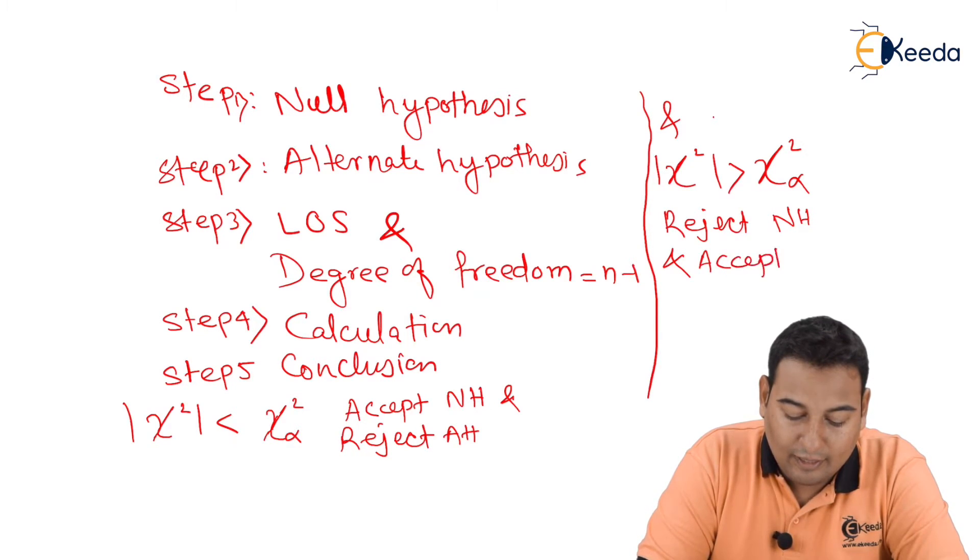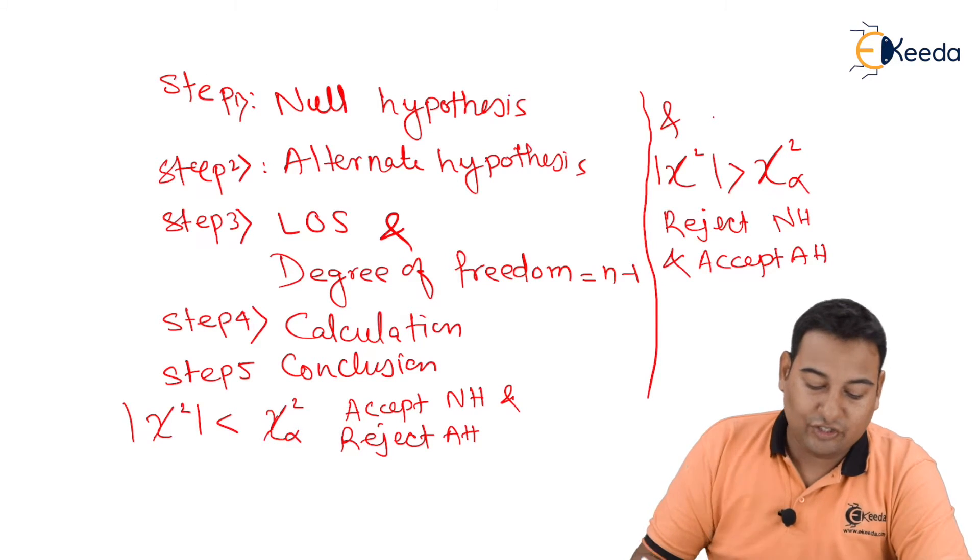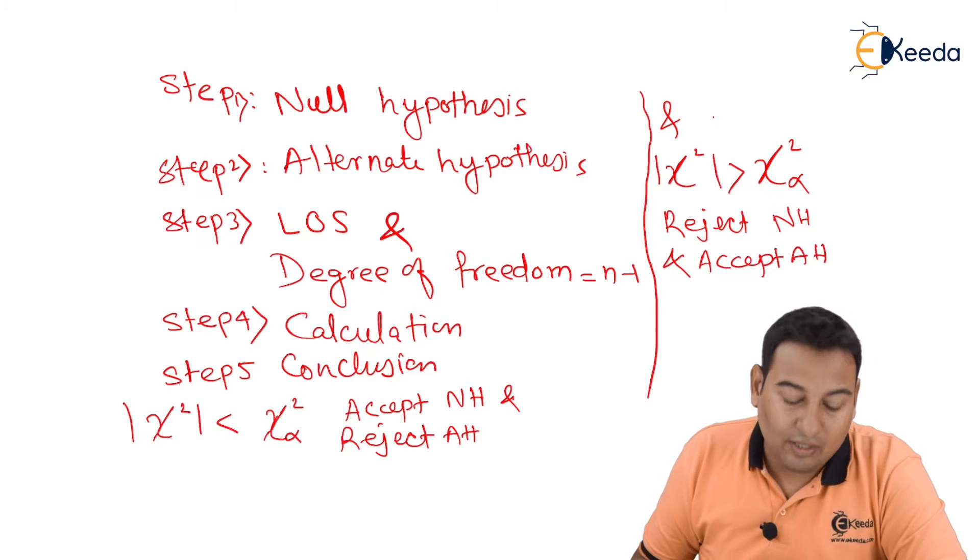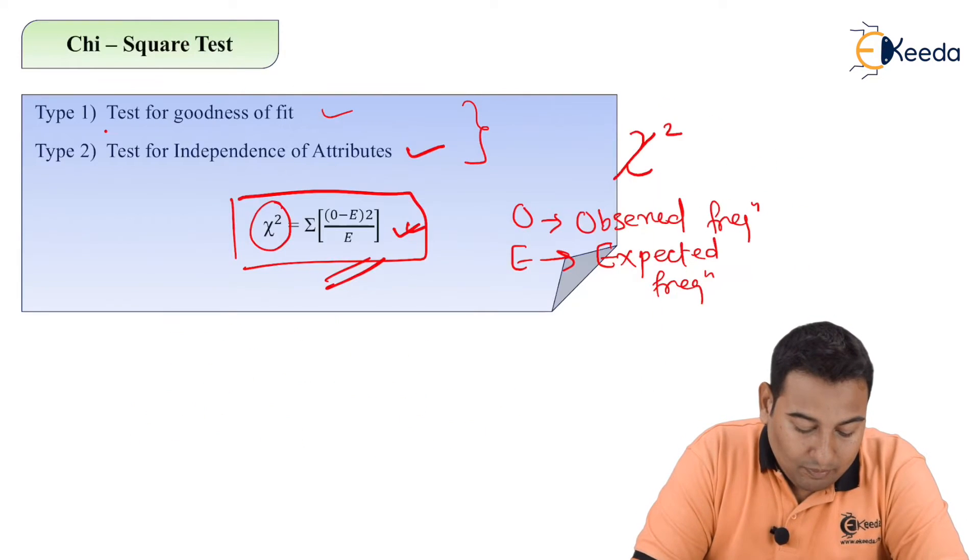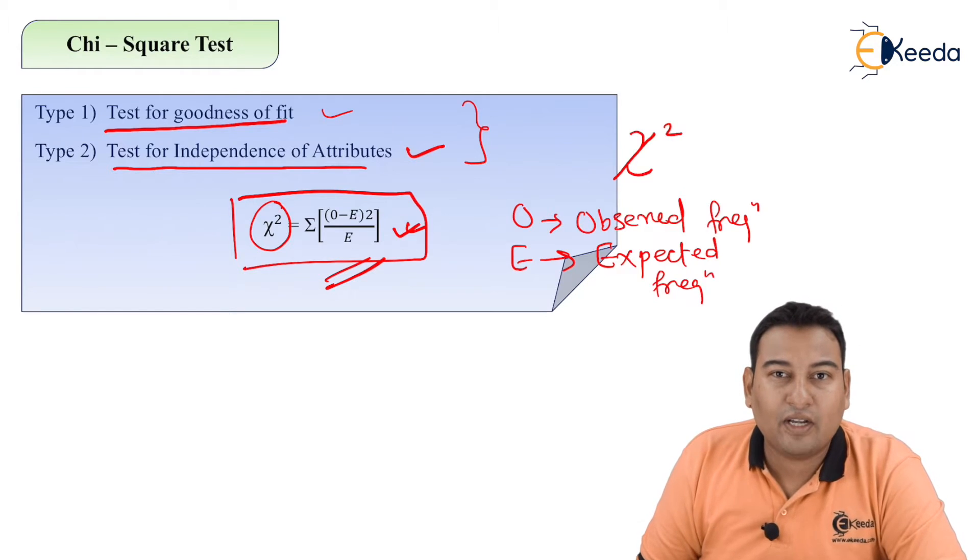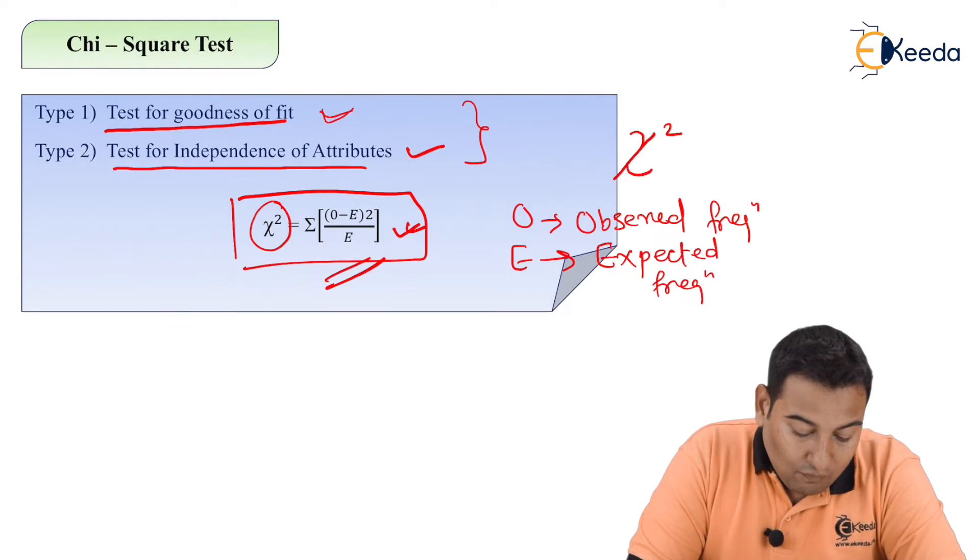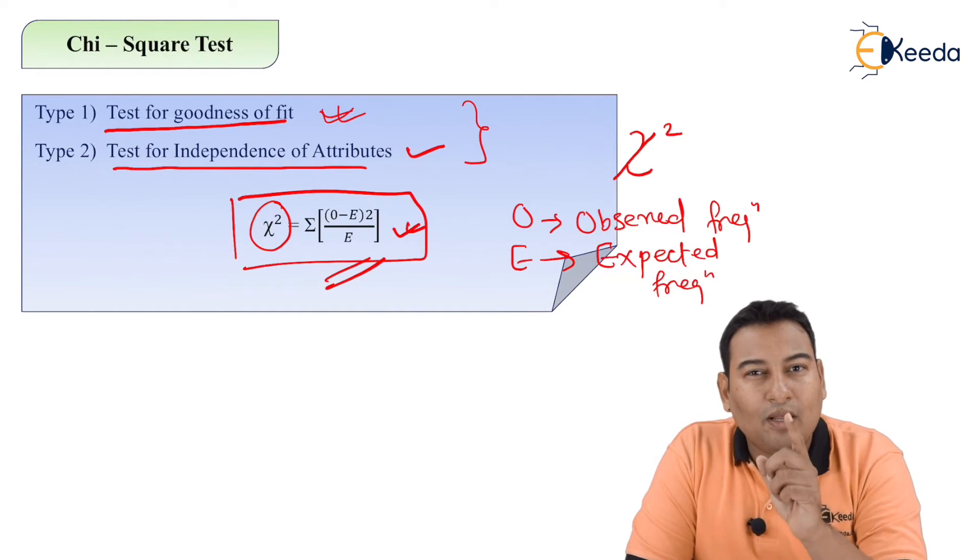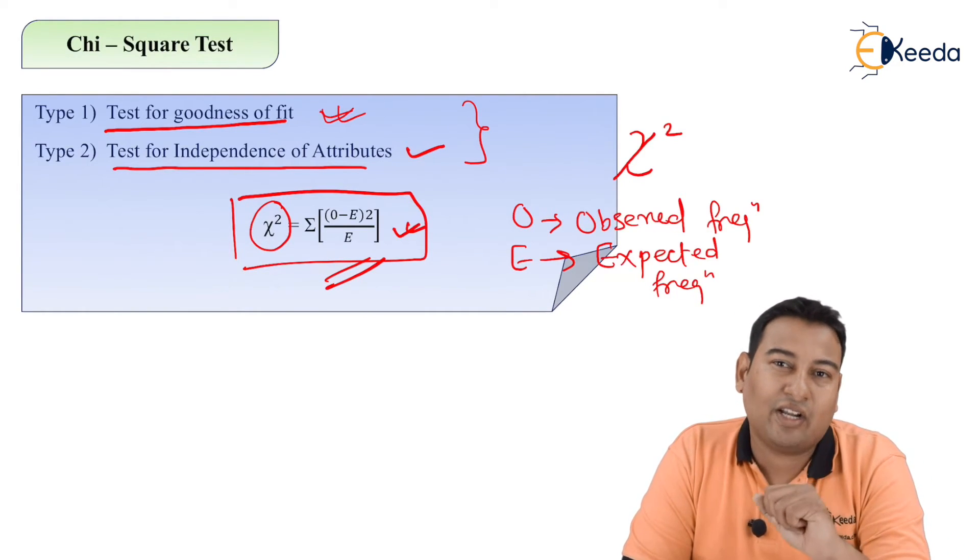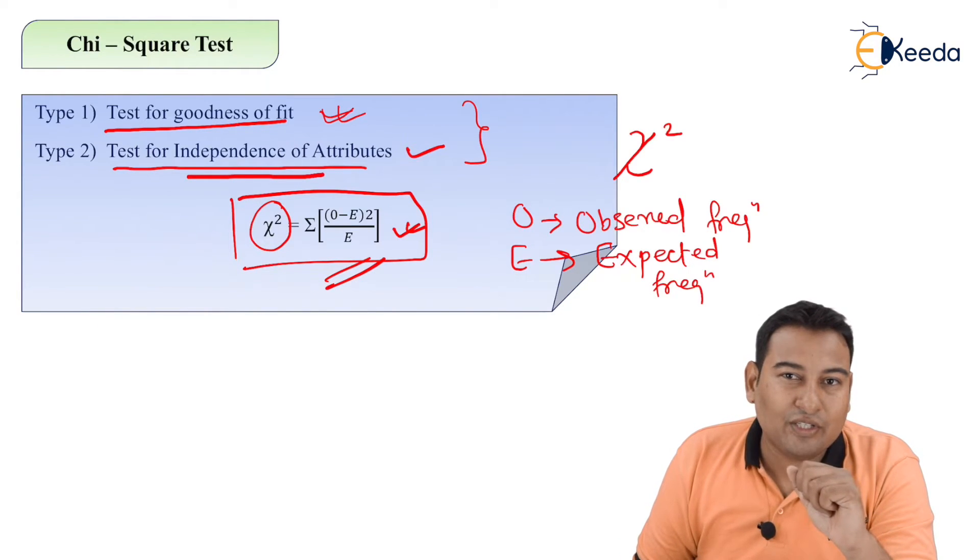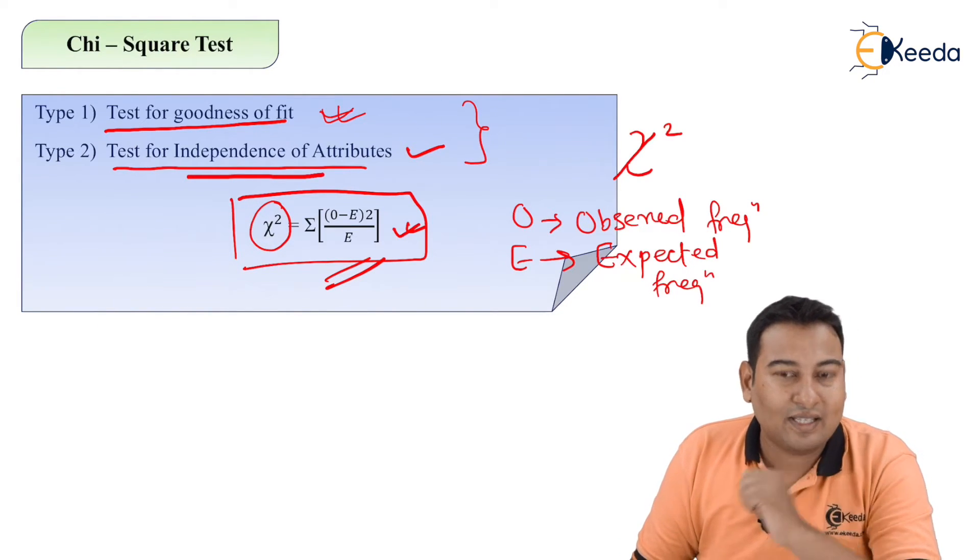So these are the five steps through which all the problems will be solved. Two types of problem: test for goodness of fit, test of independence of attributes. Here the difference is, in case of goodness of fit there will be problem revolving around one attribute; here there will be multiple attributes.